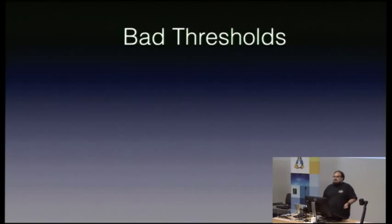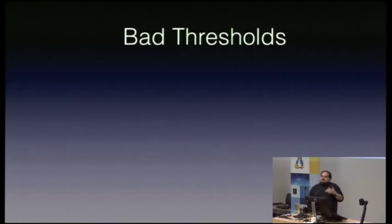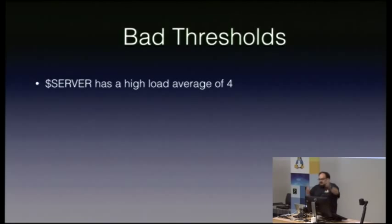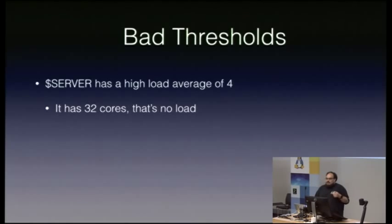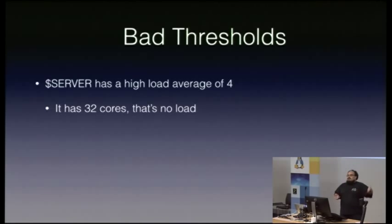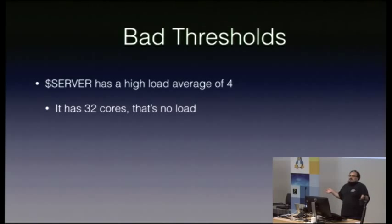Really bad thresholds are an incredibly common pattern. Virtually every alert has bad thresholds — they're just not always entirely obvious. This server has a high load average of 4. It's got 32 cores. That's not actually a high load average. At a previous job, I had to rewrite the Nagios load average check for precisely this reason. We cared if a box had a load average of 3 or 4 per core — but we had boxes from anywhere from 2 to 16 cores, so we had to rewrite the check to make it generic and handle that.